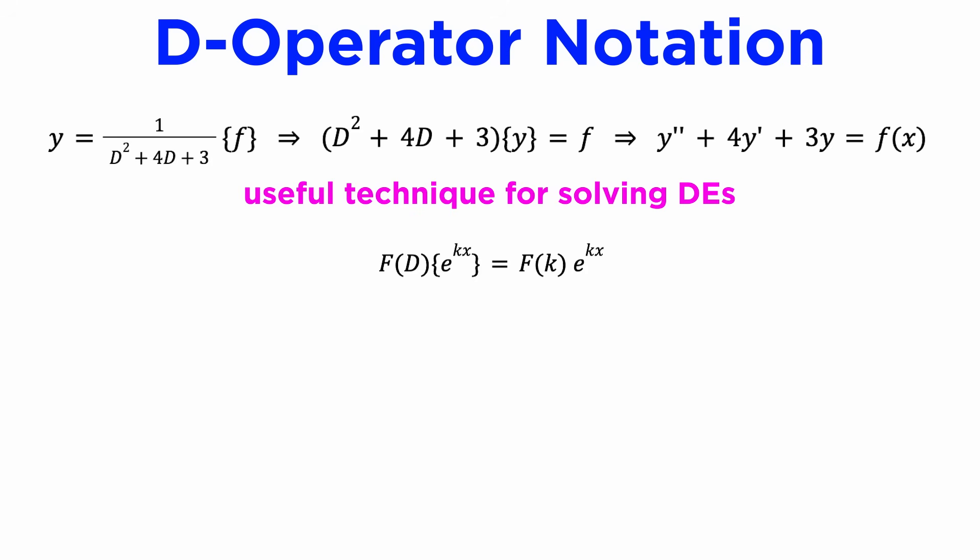For example, if f of x is an exponential function e to the kx, then any differential operator denoted capital F of D acting on e to the kx is equal to f evaluated at k times e to the kx, as long as f of k is non-singular.